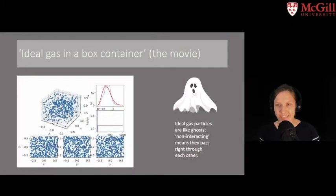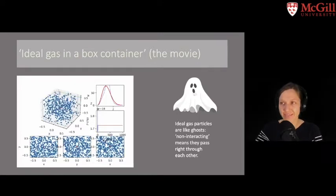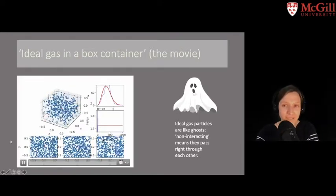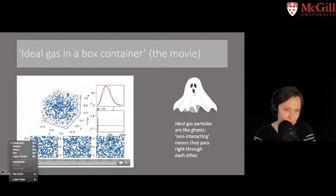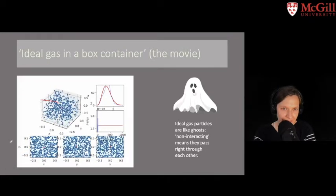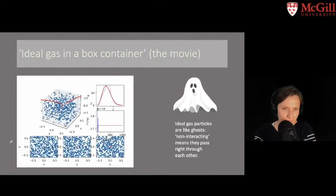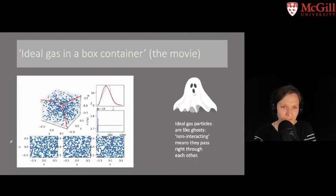What is an ideal gas? Ideal gas is a collection of particles in a container. In this movie, the container walls are only shown in the back. I'll draw the box to make it a little more visible. So we have our simulation box.